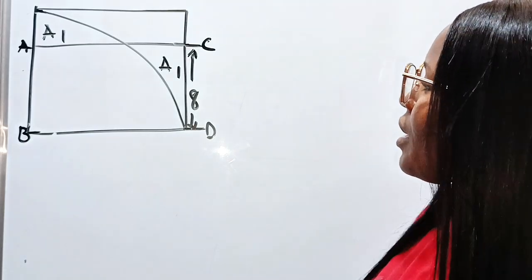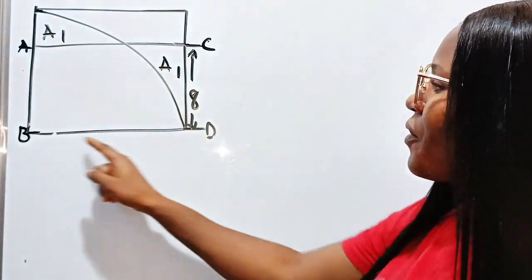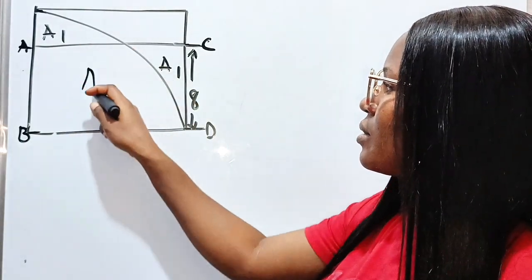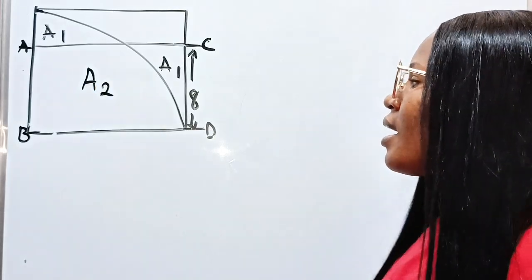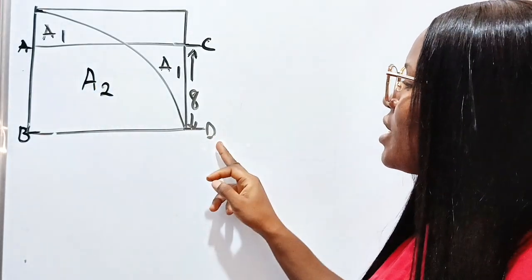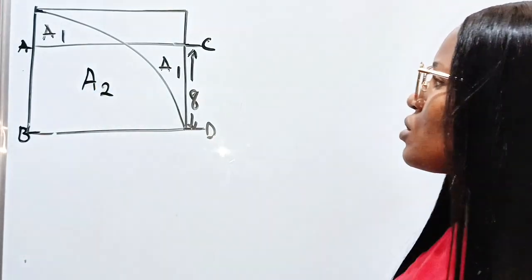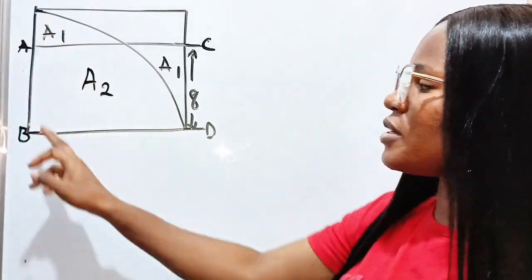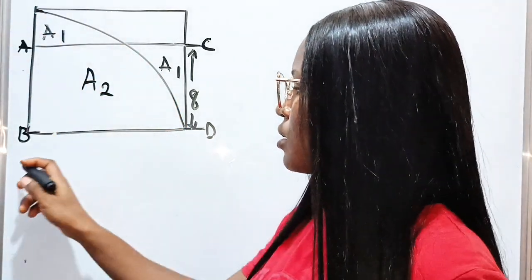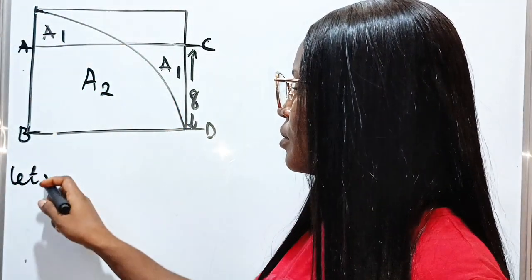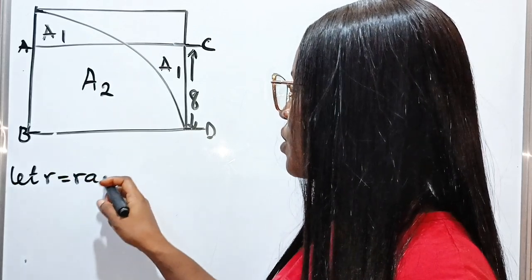Now, let's call this remaining portion of the rectangle A2. And from B to D is equal to the radius of this quadrant. So let R be equal to radius of the quadrant.